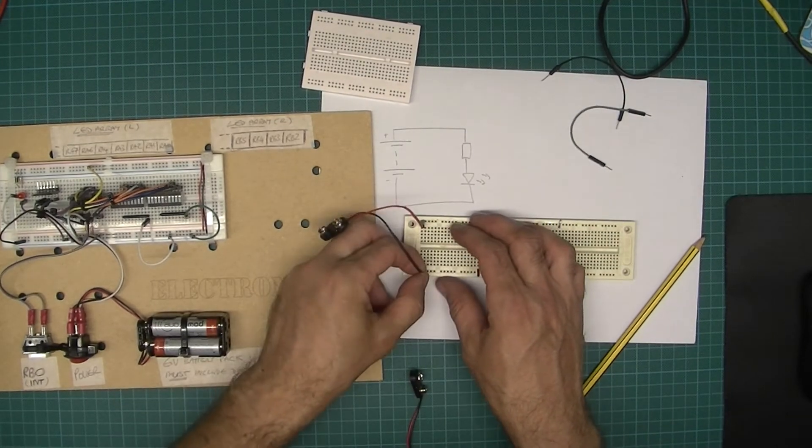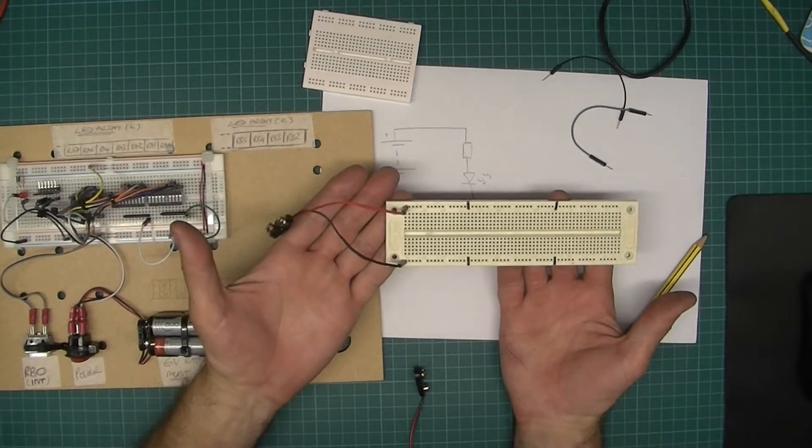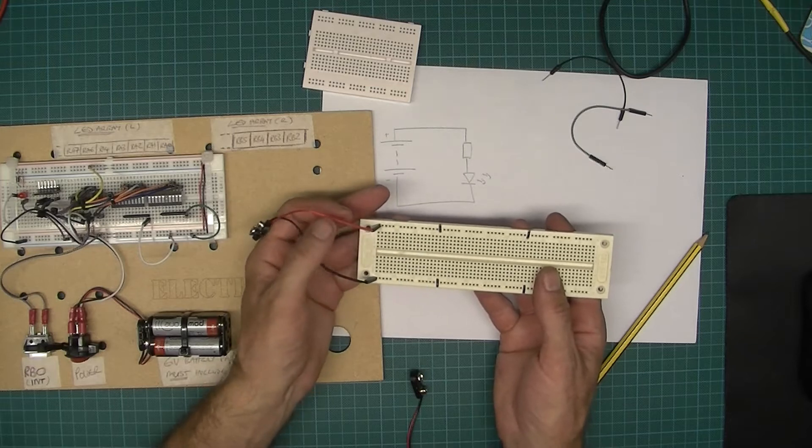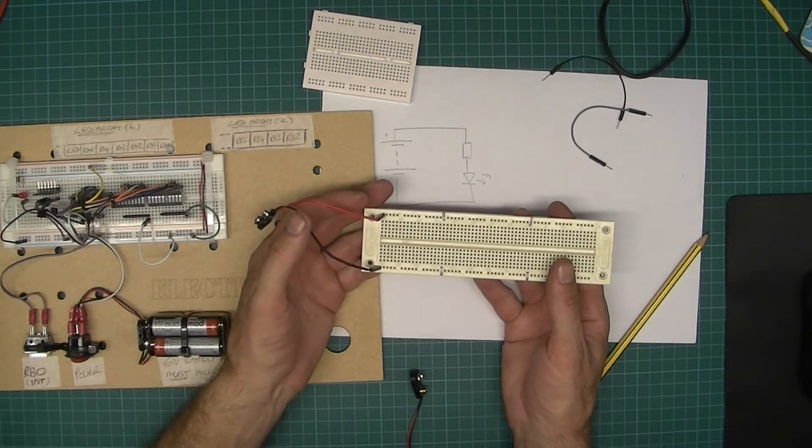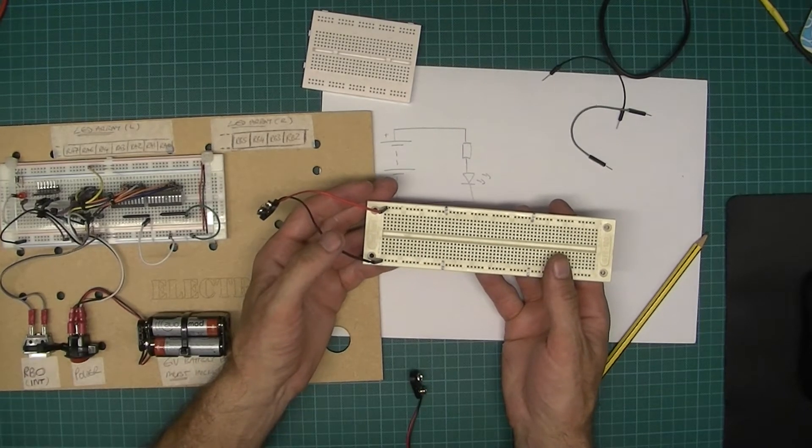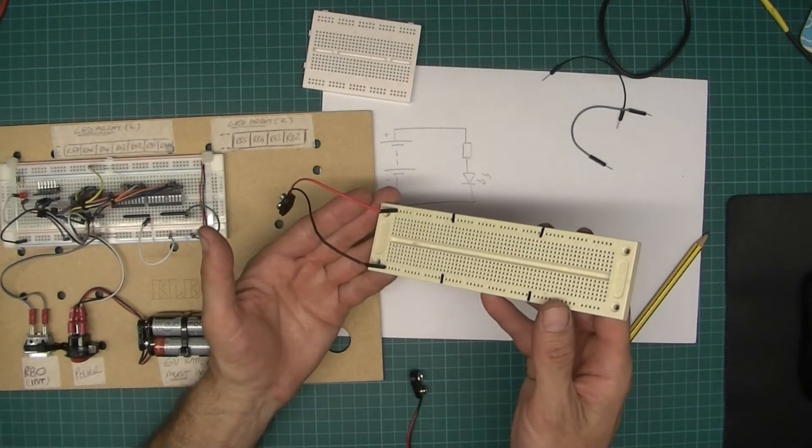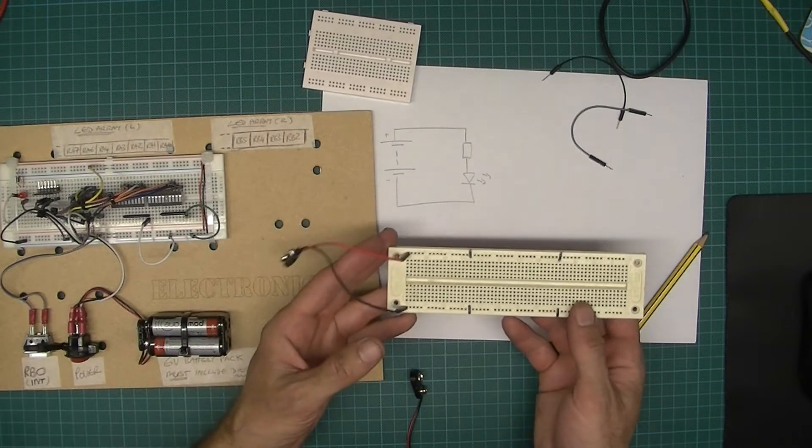If I were using this breadboard, I would probably ideally lay it out something like that. We've got the red lead—ideally use red for the positive supply, it just makes it easier because then everyone else in the class is doing the same as well.